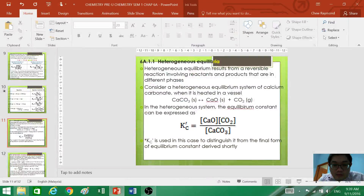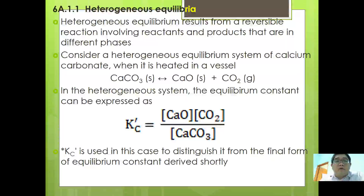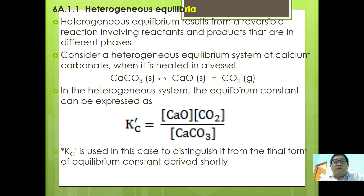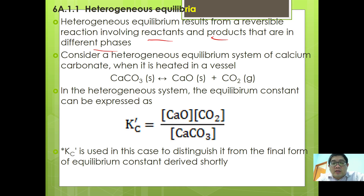We are going to continue with the second video where we are going to deal with heterogeneous equilibrium. Heterogeneous equilibrium results from reversible reactions involving reactants and products that are in different states of matter. Consider the heterogeneous equilibrium system of calcium carbonate when it is heated in a vessel.